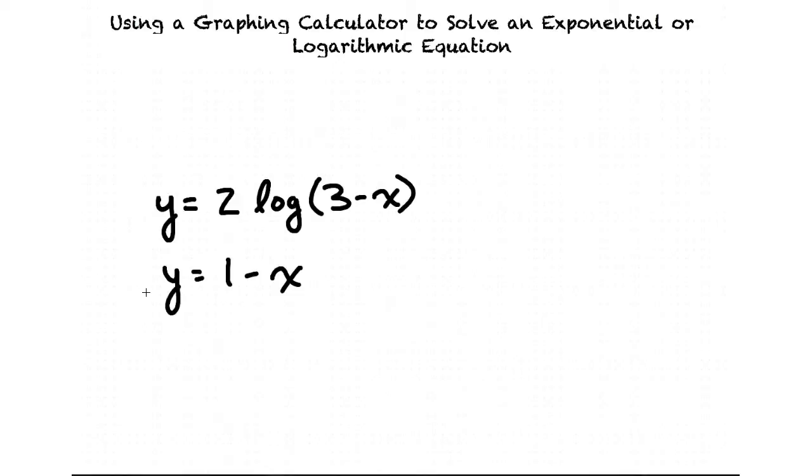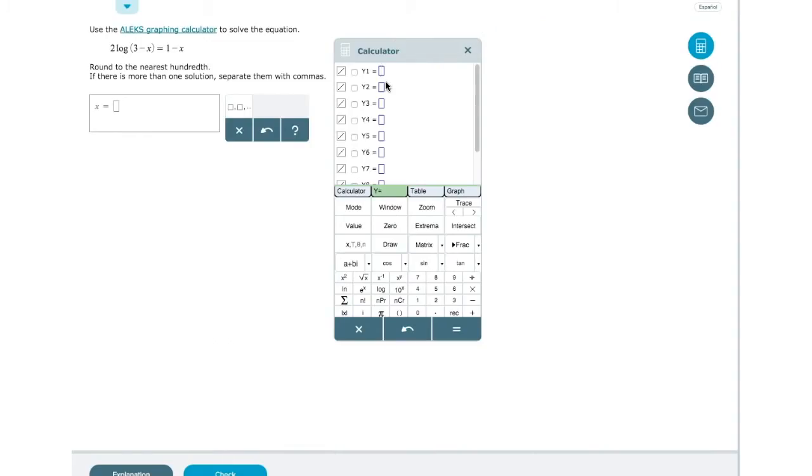We want to find which x values can be plugged in to produce the same y value from both equations. First we can enter both of these equations into our calculator and then use the calculator's graphing tools to find where the lines intersect.